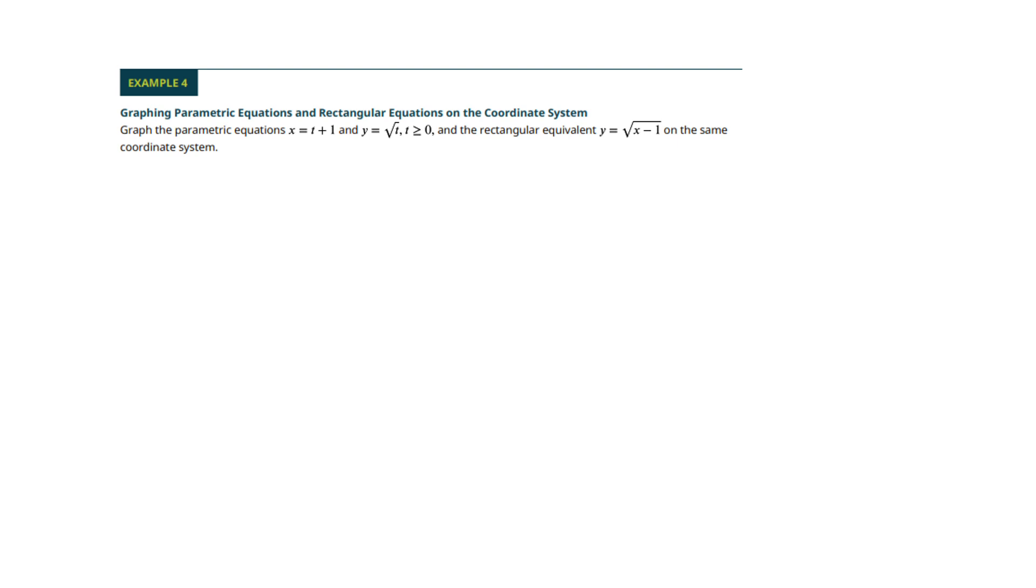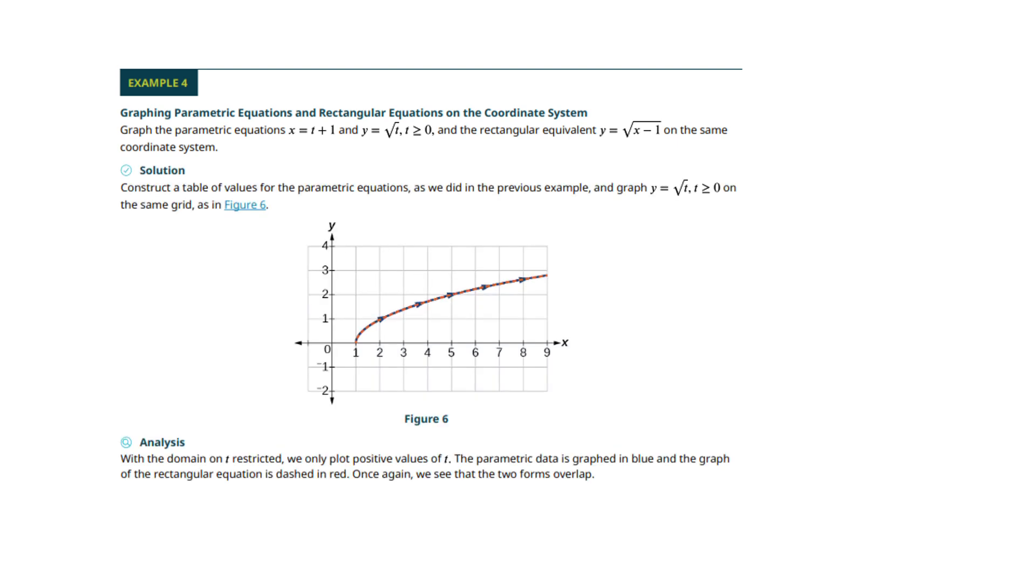Okay. Let's see. What do we got here? Not much. They're just asking us to do the rectangular and the parametric on the same graph. It's not going to do anything. So all you would do here, just, I would just graph it just like you've done by picking t,